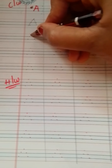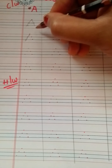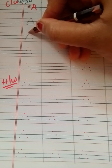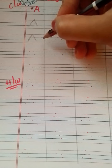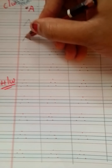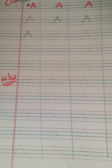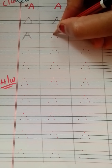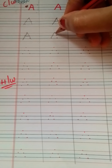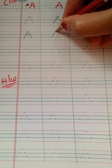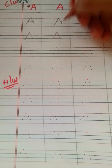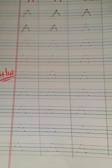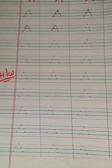Top line to second middle line — left slanting line. Again from top line to second middle line — one more right slanting line, sleeping line. This is A. Top line to second middle line — left slanting line. Again from top line to second middle line — one more slanting line, sleeping line. It is also A.